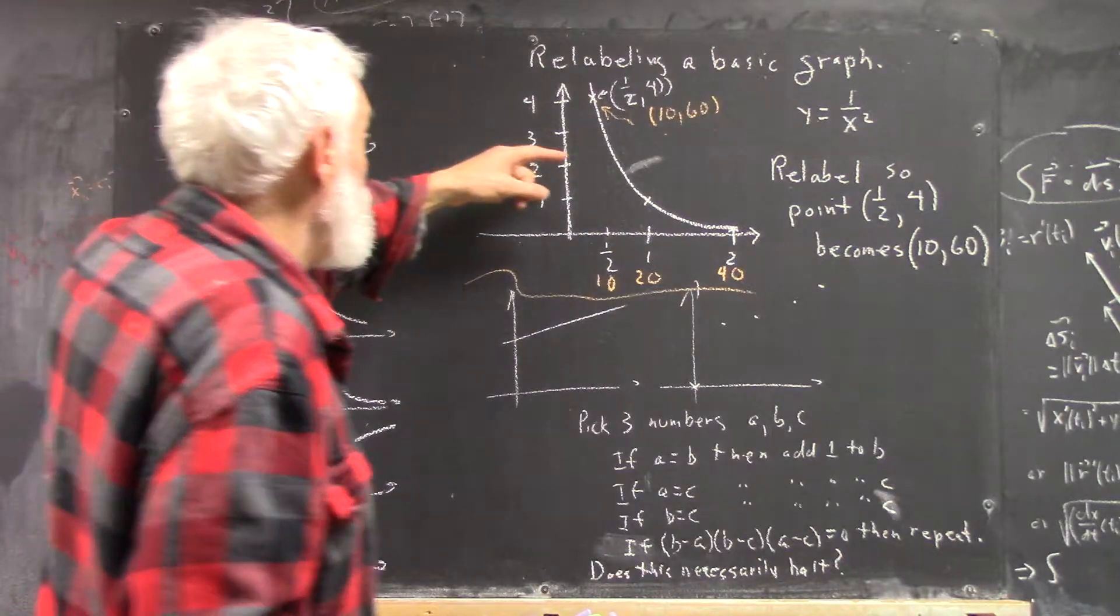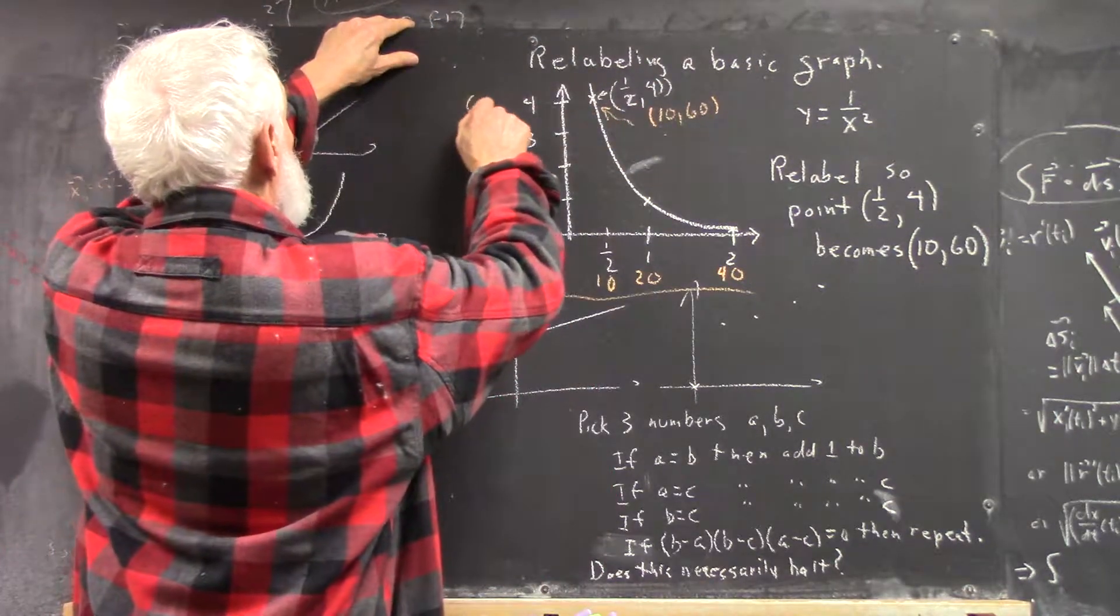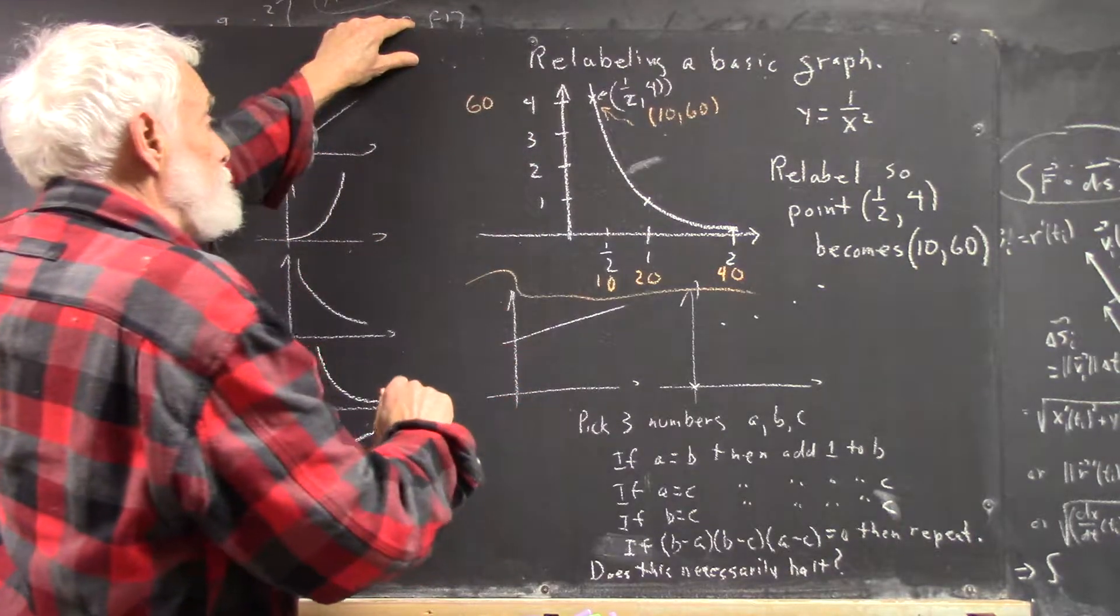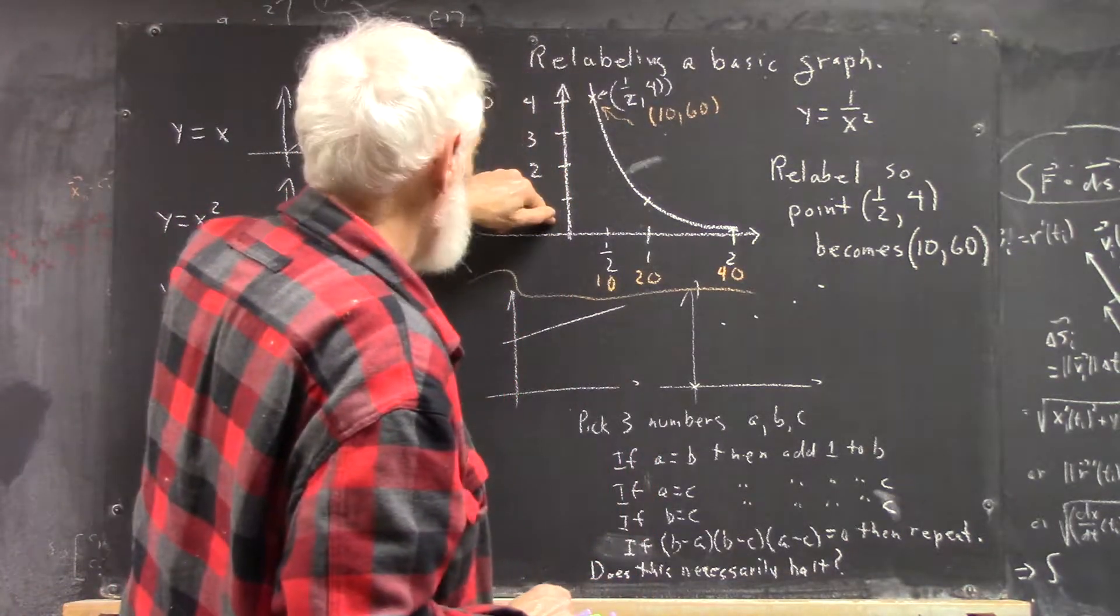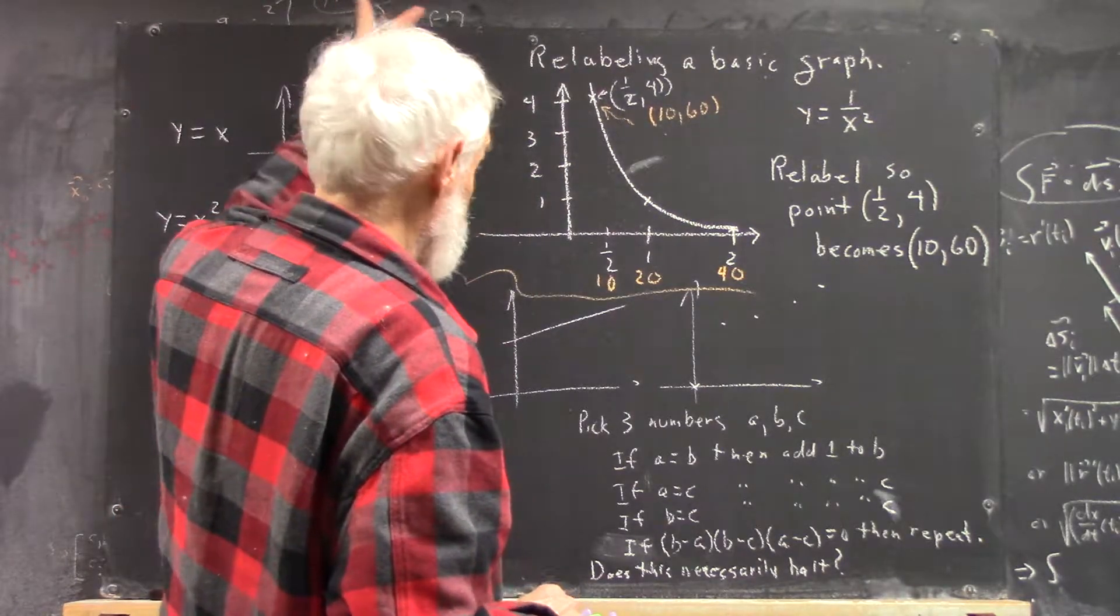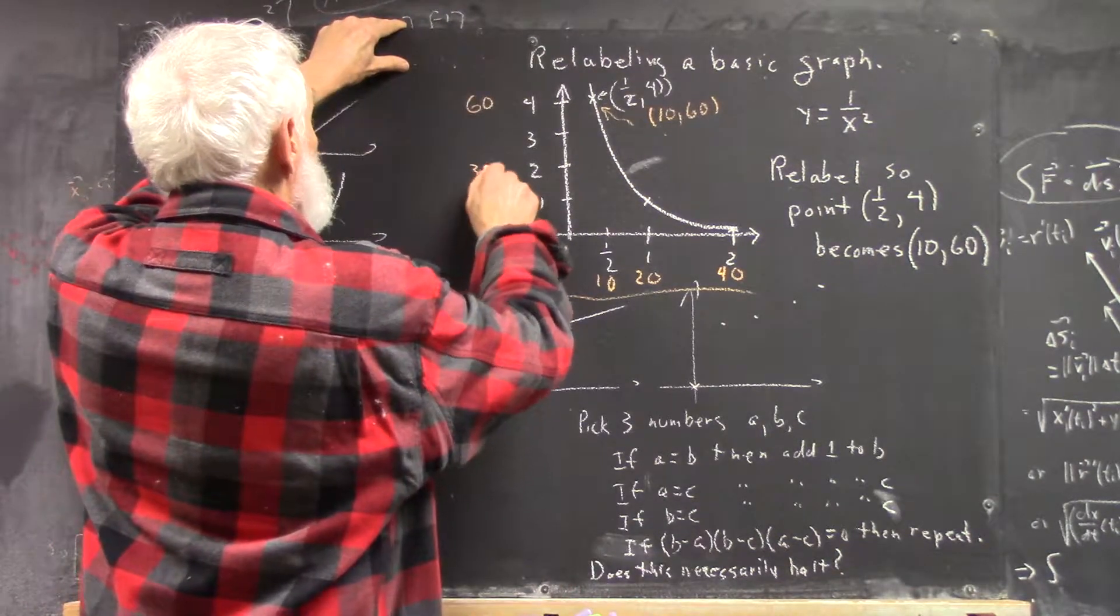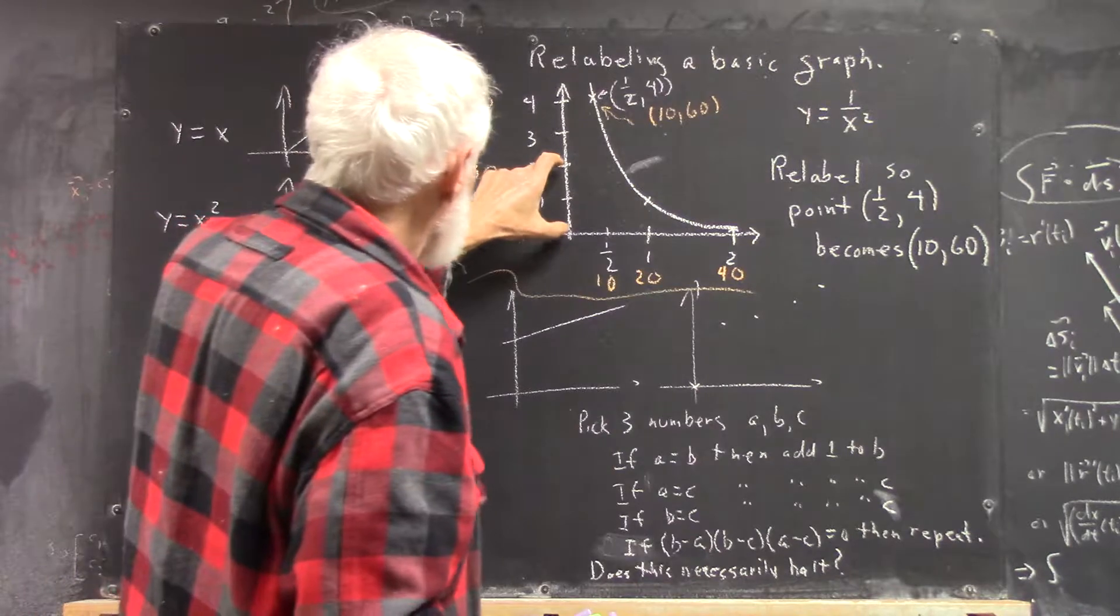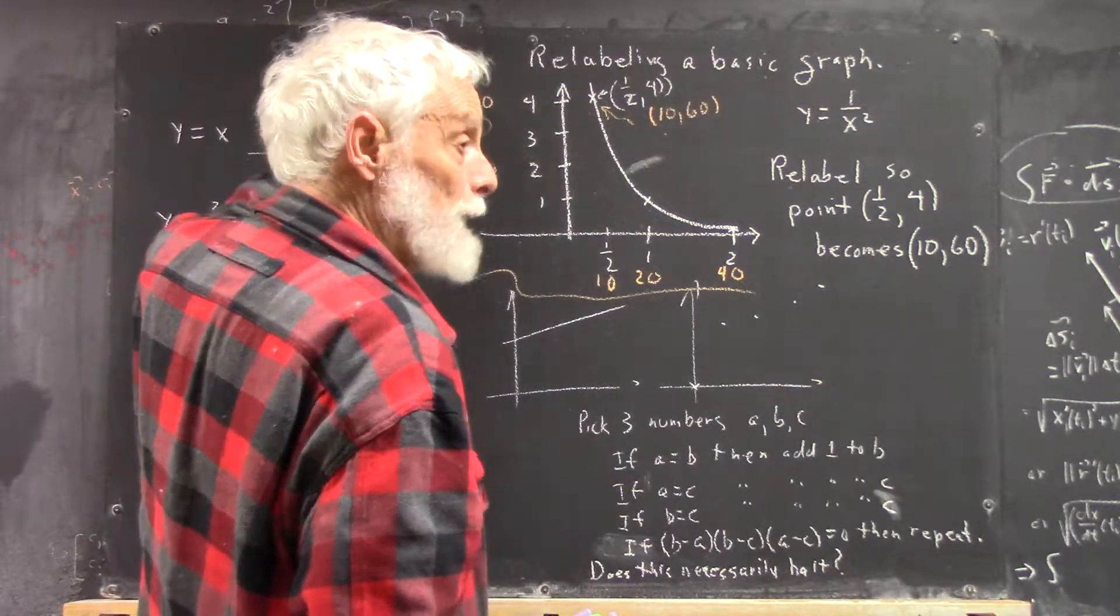Up here, instead of 4, we now have 60. So I'm going to draw a different label, 60, and then I'll figure out what each of these numbers is. And that's easy to do. Half of 60 is 30. Half of 4 is 2. So clearly, this is half of this, so this has to be half of this.